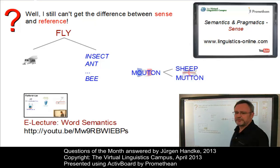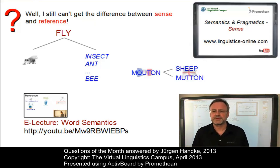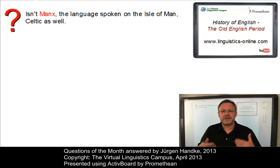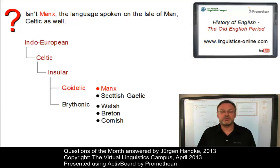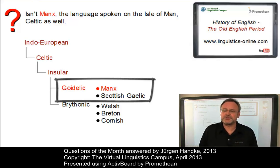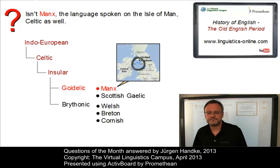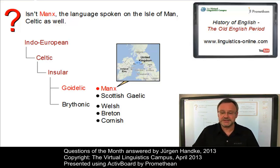Further details can be found in our e-lecture Word Semantics, where both reference and sense are compared. In our historical video, we didn't mention Manx as another Celtic language. Manx is in fact a Celtic language — it's in the Goidelic branch alongside Scottish Gaelic, and as our user correctly pointed out, it is spoken on the Isle of Man. However, the last native speaker died in the 1970s, so the language is officially considered extinct. This is why we did not list it among the living Celtic languages.